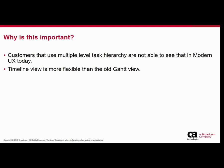Why is this new timeline important? Customers have been asking for a long time how they can see the multiple levels they have defined for tasks in the modern UX. Prior to 15.7, customers using modern UX could either see all tasks in a grid view or in the task list view, which showed only the top-level task and one task underneath — just two levels. Starting 15.7, we have addressed that by providing a new timeline view available in the modern UX.